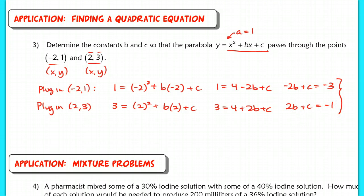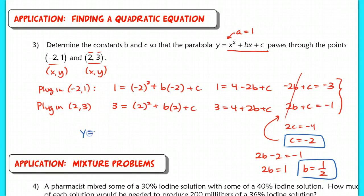Now I have a system here in two equations with two unknowns, and I can solve this very easily. Since I already have the b's lined up to be able to eliminate, I end up with 2c equaling negative 4. c will equal negative 2. And then if I plug that back into the original here, I have 2b minus 2 equals negative 1. So 2b equals positive 1, and b will equal 1 half. Therefore, if c equals negative 2 and b equals 1 half, I have the equation for my quadratic y equals x squared plus 1 half x minus 2. This is the parabola that passes through these two original points.